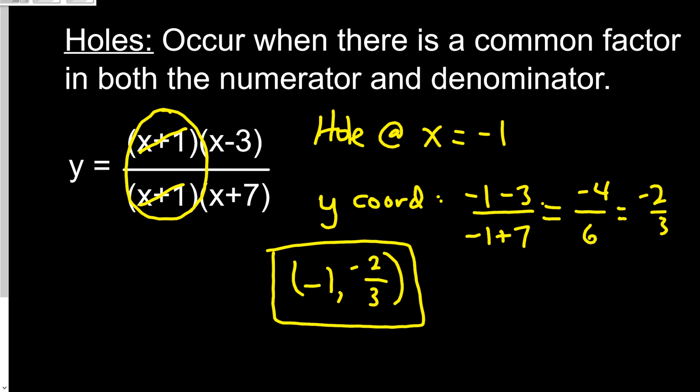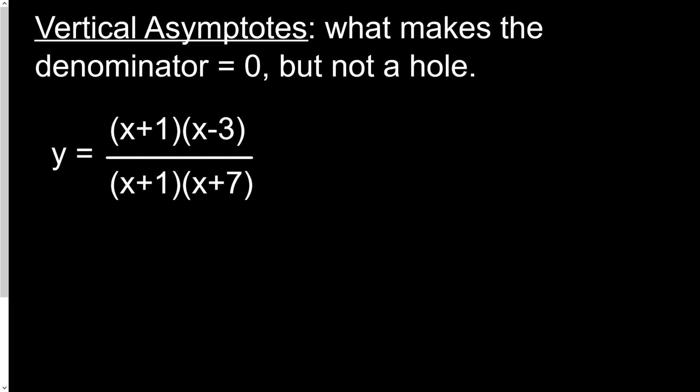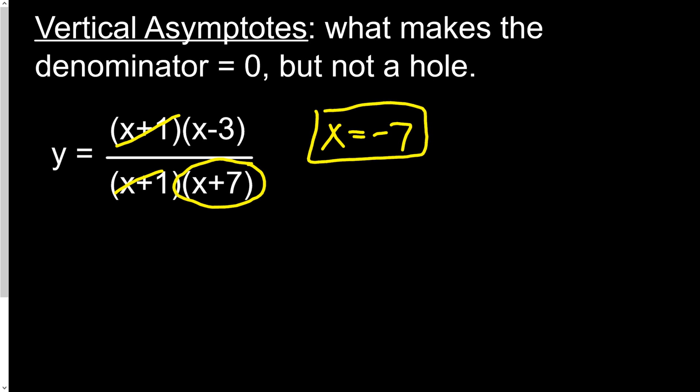The next thing we're going to talk about is the vertical asymptote. This is what makes the denominator equal to 0, but it's not a hole. We cross out the hole factor and look for when the remaining denominator is 0. That's going to be x equals negative 7. We can't divide by 0, so the graph creates a vertical asymptote and does some funky stuff at negative 7.